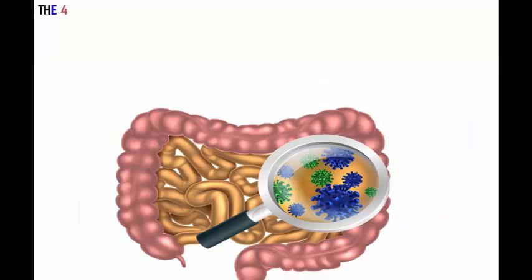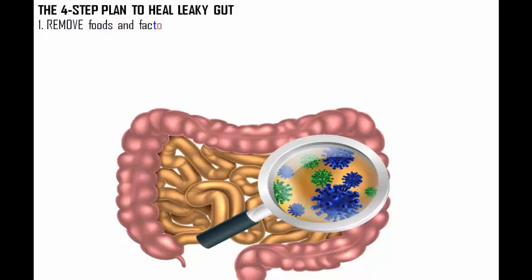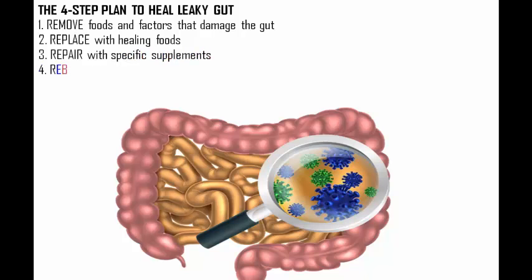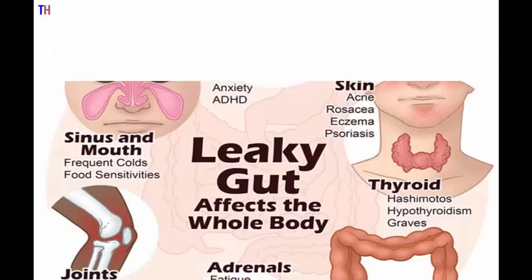The four-step plan to heal leaky gut: one, remove foods and factors that damage the gut; two, replace with healing foods; three, repair with specific supplements; four, rebalance with probiotics.